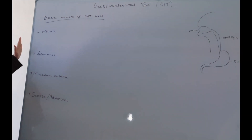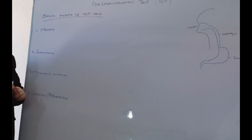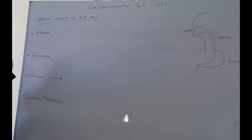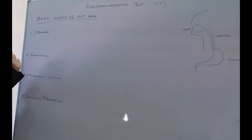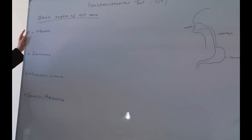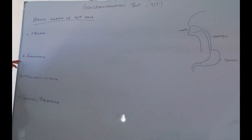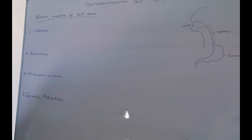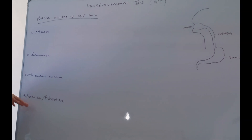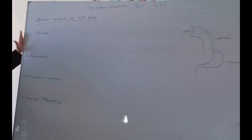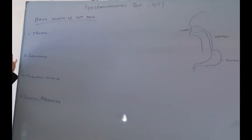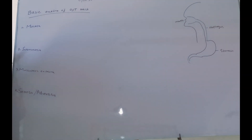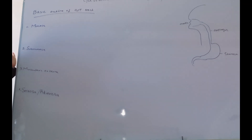Firstly, I will tell you just the basic outline of the GIT. There are basically four layers which you will find in every organ or structure of the GIT. The first layer is the mucosa, second is the submucosa, third is the muscularis externa, and the fourth may be serosa or adventitia, depending upon the location. These are the four layers you will find in every organ of the GIT, with some differences, but the basic outline will be this.